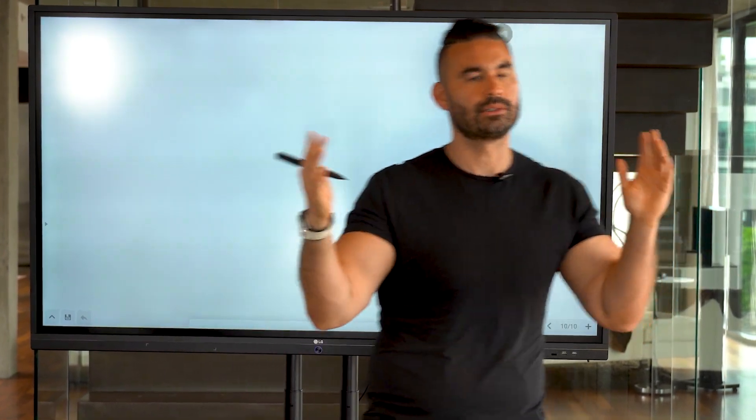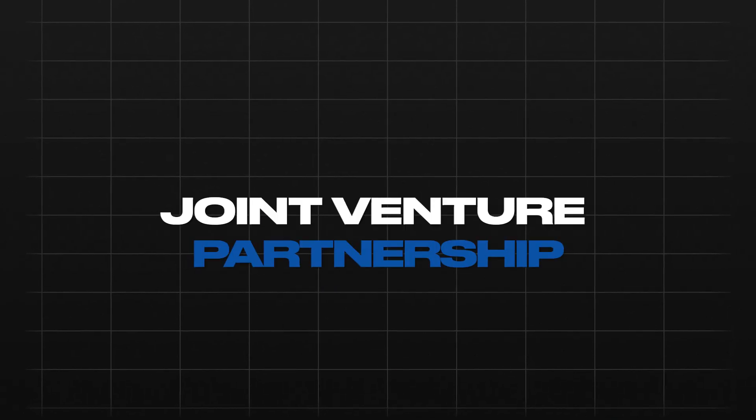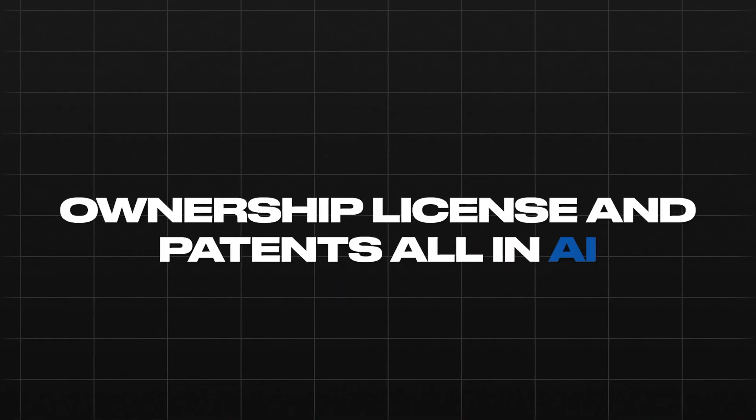Where attention goes, money flows, right? So we can get there before the money gets there and start building. But by the time the money gets there, we're rich. So it's a very simple concept that you can use for anything. So what we do are three simple things. We do joint venture partnerships, ownership and license and patents all in AI.